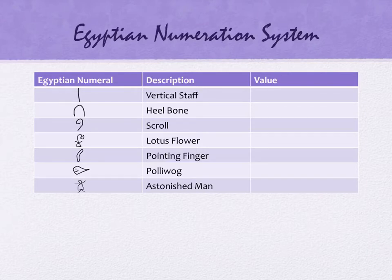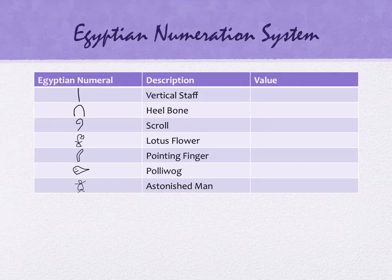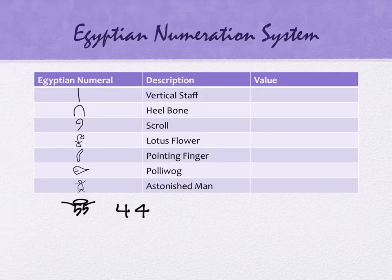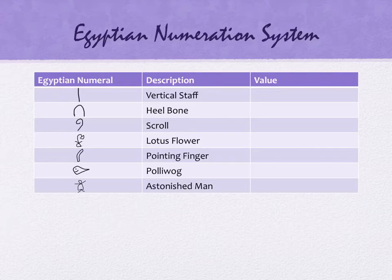Different resources actually draw these differently. For example, our contemporary math book for the astonished man makes it look a little different. There seem to be some inconsistencies, but it's probably like the difference between a printed and handwritten 4. At any rate, each of these different symbols has a value that we're going to write in our number system.